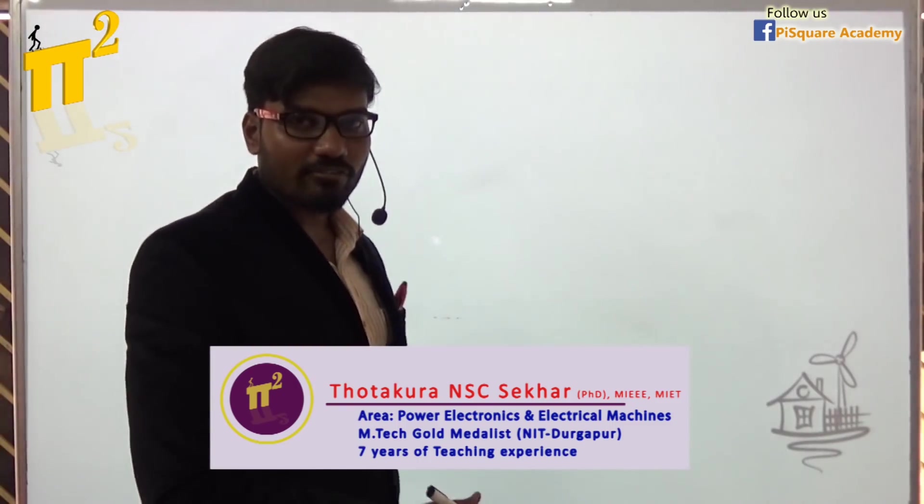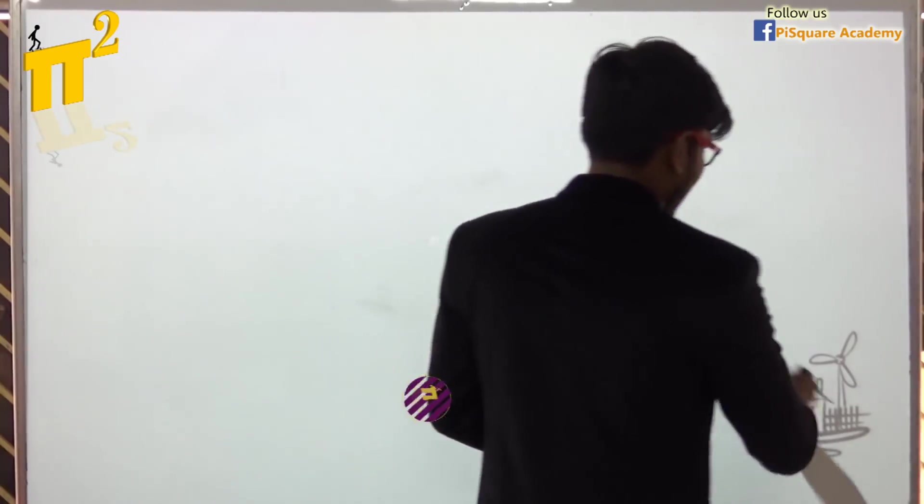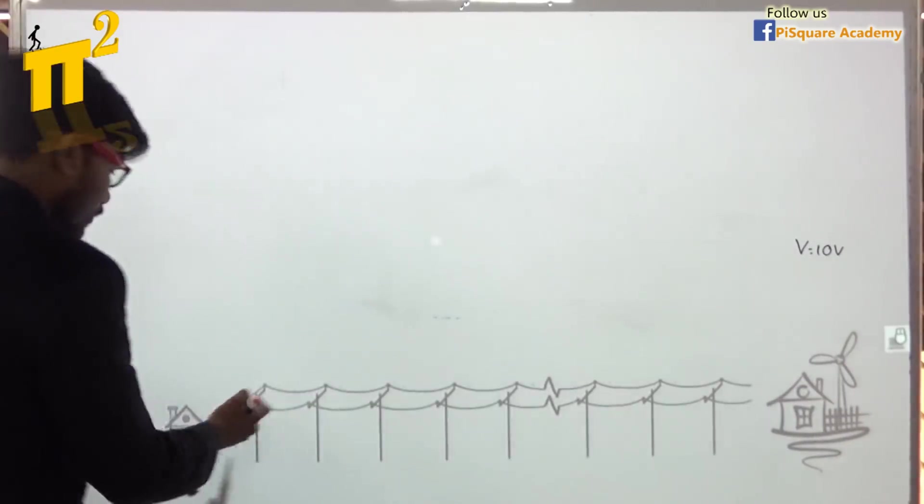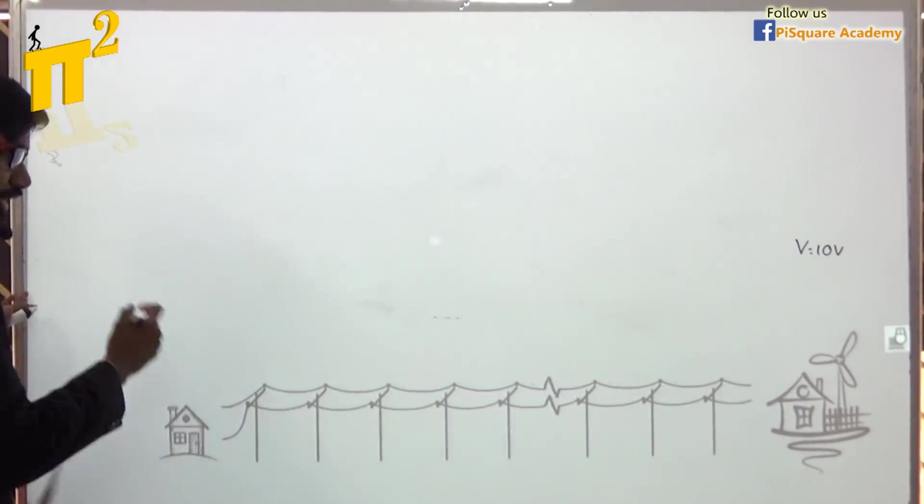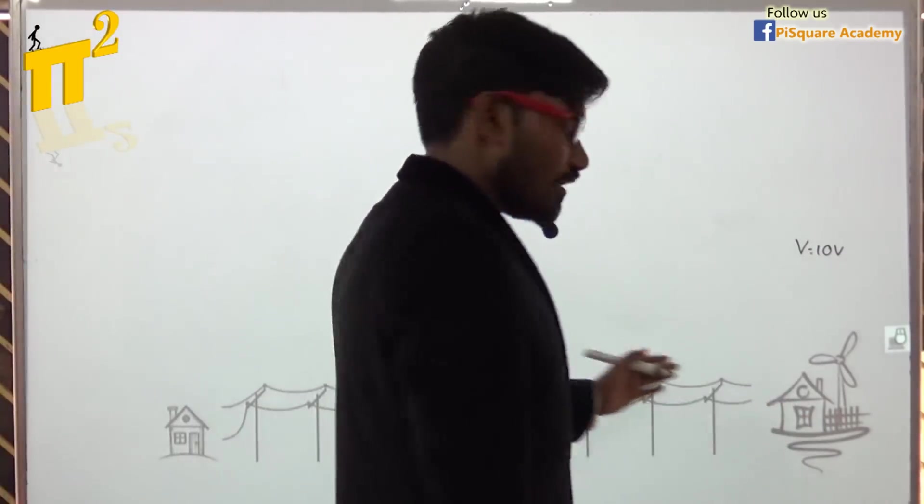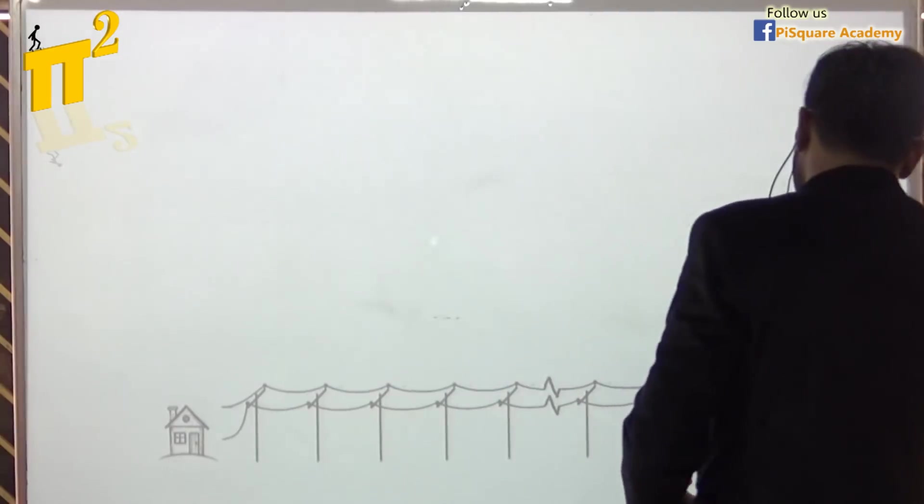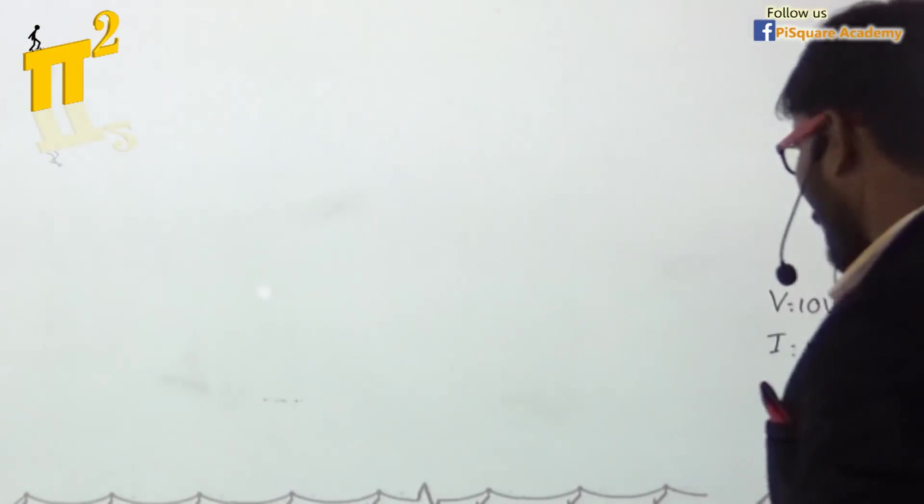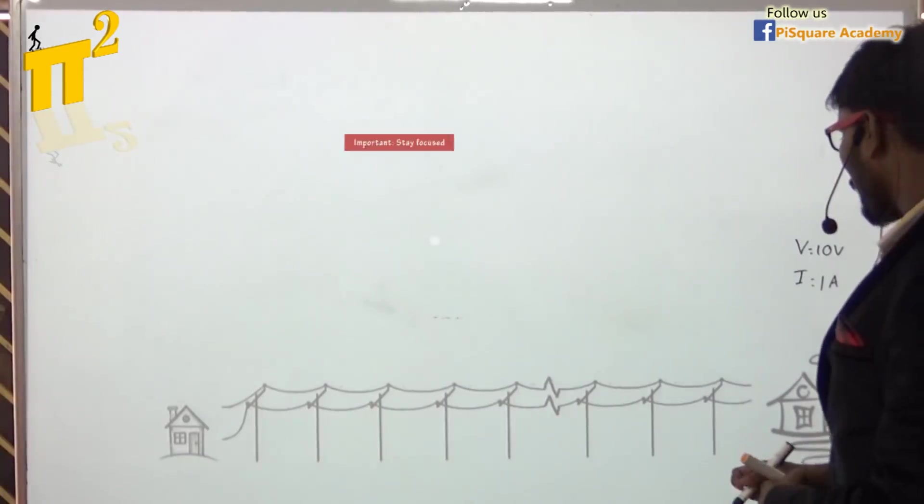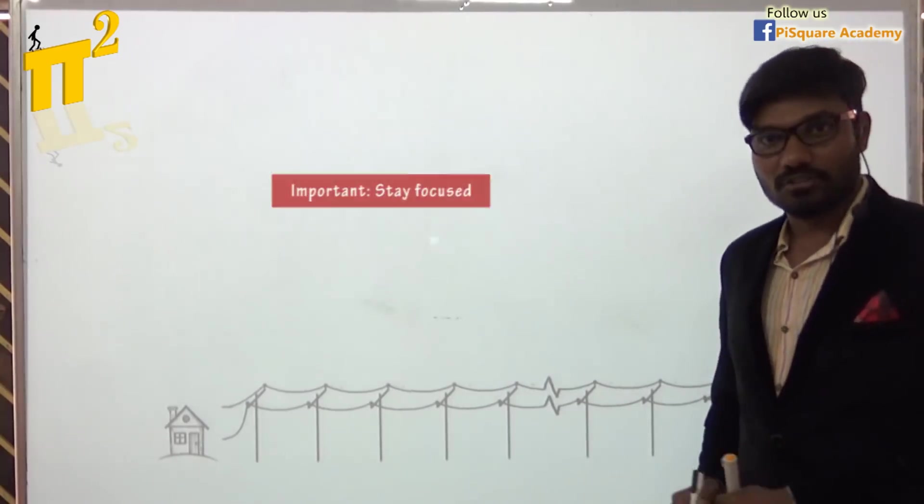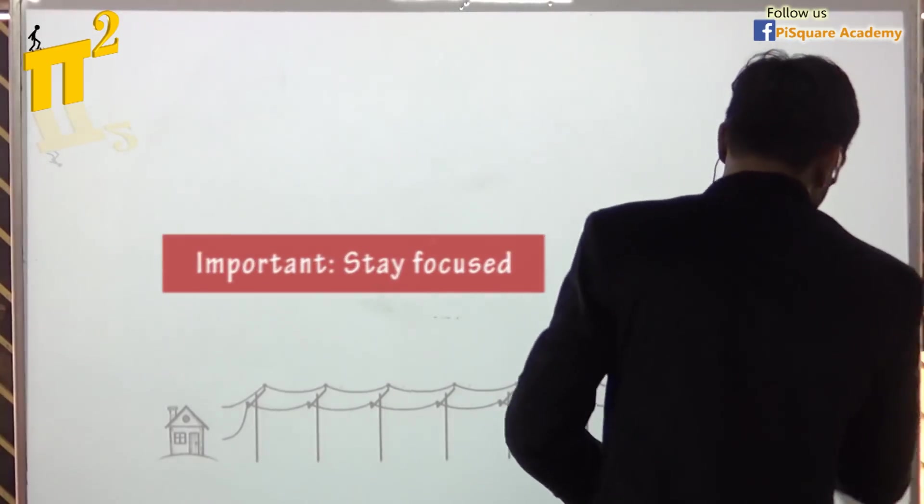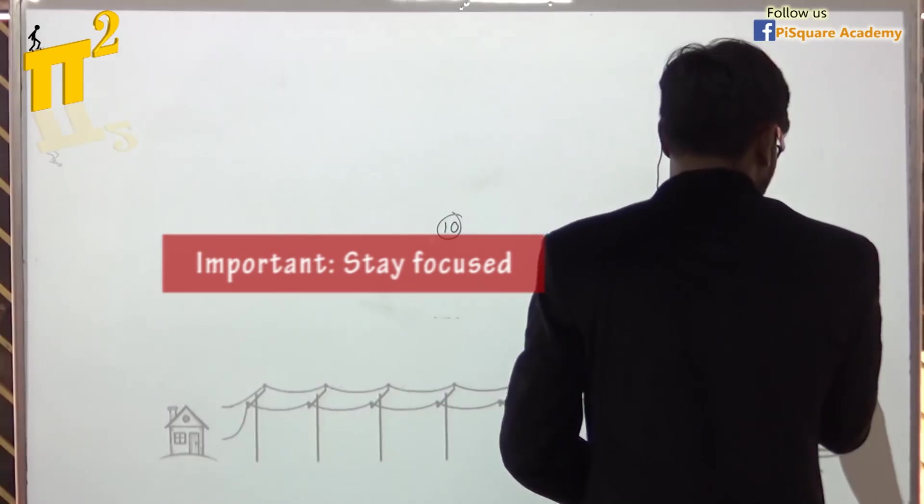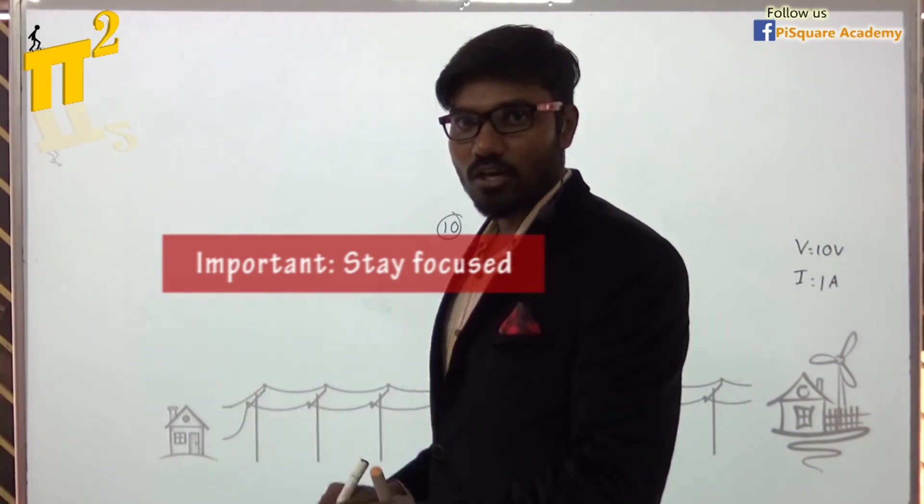Let me take a powerhouse where we generate electricity. Here we are generating a voltage of 10 volts and we are giving that to a load through transmission line. Why we have powerhouse here? To give power to the loads. Let's suppose this powerhouse is supplying 1 ampere current for simplicity. I am taking here RMS values. We know power means voltage into current. That is the basic definition. So it seems this powerhouse is giving 10 units of power because voltage into current is 10.